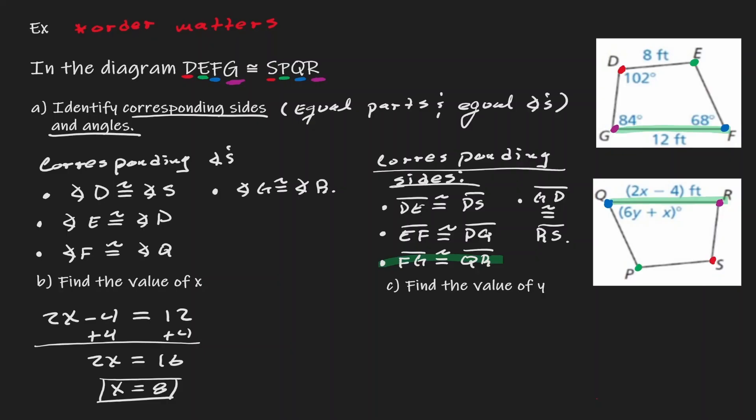Now, if we take a look at how do we find the value of Y — let's see where Y is within the equation. We can see that Y is part of this angle, angle Q. But we know, because they are corresponding angles, that it is equal to 68.